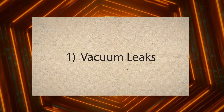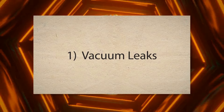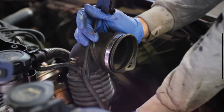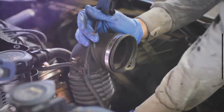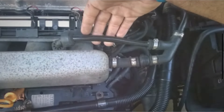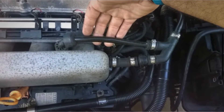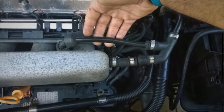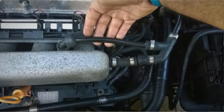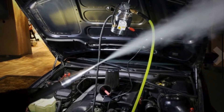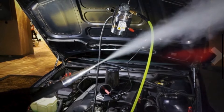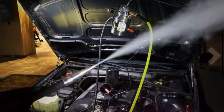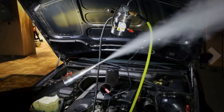1. Vacuum Leaks. The engine of your vehicle relies on a certain amount of vacuum pressure to maintain a steady idle. A vacuum leak allows extra air to enter the engine, causing the air-fuel mixture to become too lean. In such a situation, your engine tries to compensate by adjusting the idle speed, leading to fluctuations in revolution.